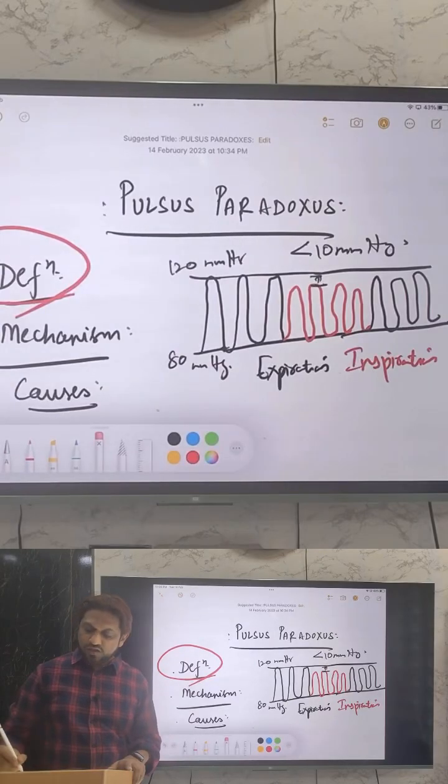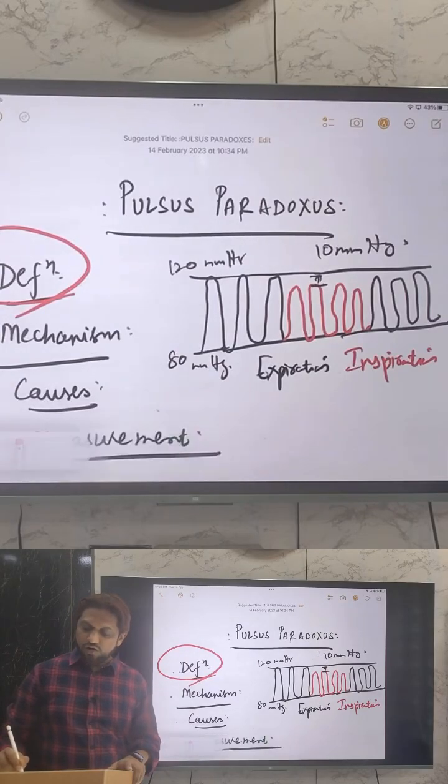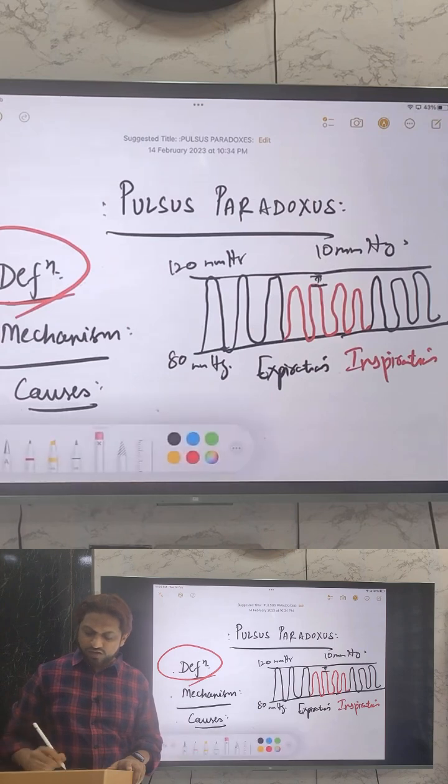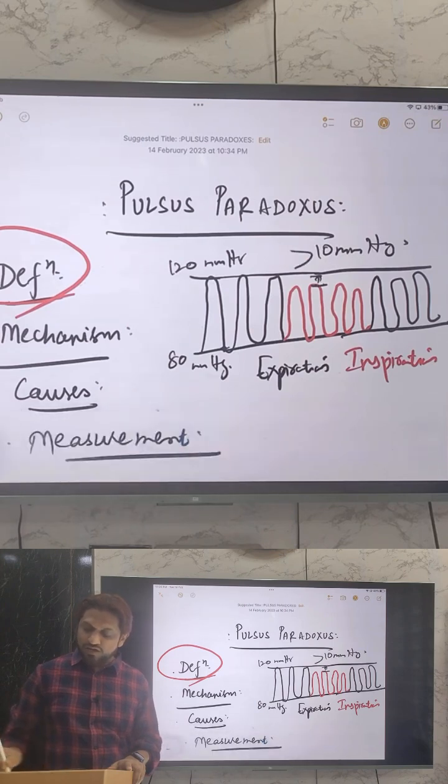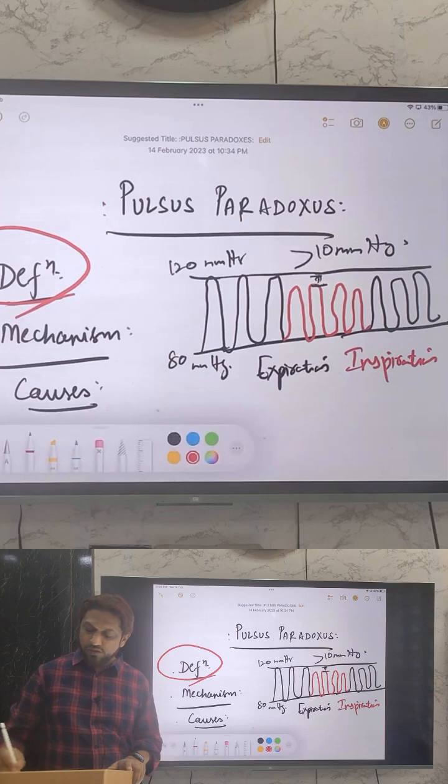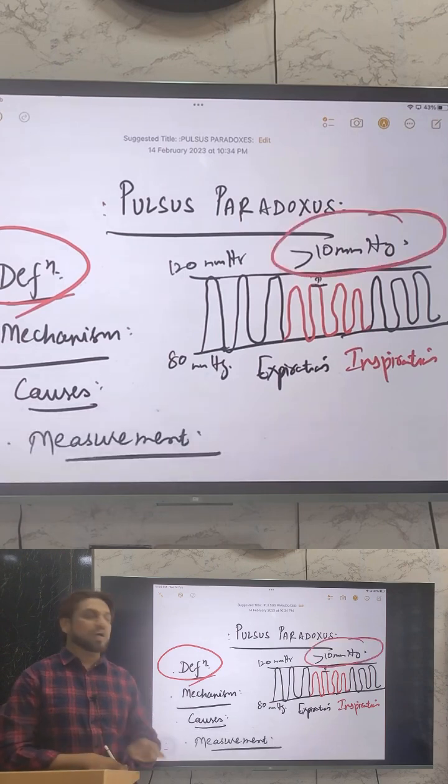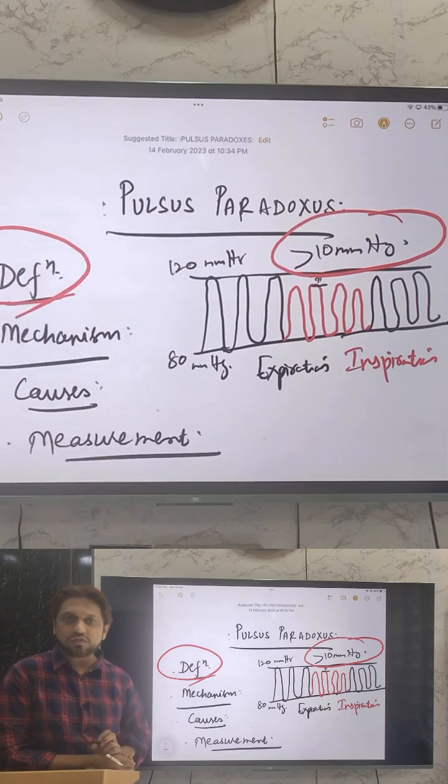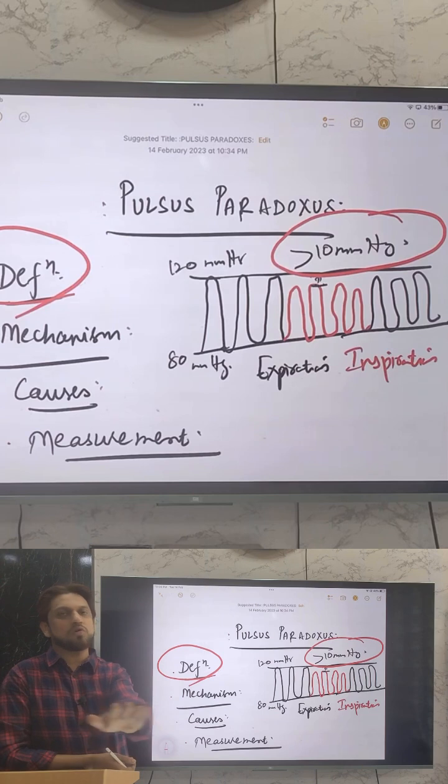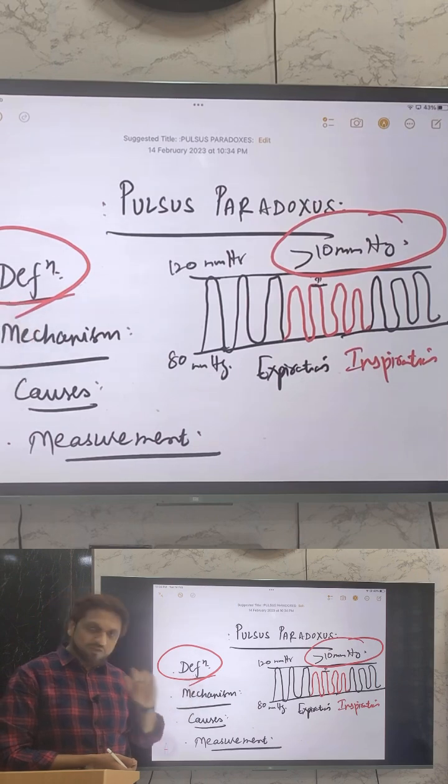If the inspiratory fall of the systolic blood pressure is more than 10 millimeter of mercury, then that clinical condition is simply called as pulsus paradoxus. Now to define what is pulsus paradoxus: it is the inspiratory fall of the systolic blood pressure more than 10 millimeter of mercury, known as pulsus paradoxus.